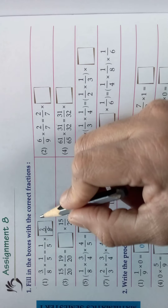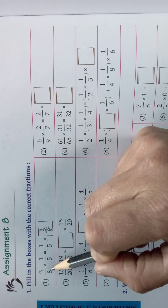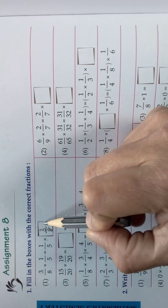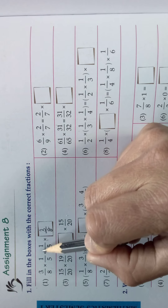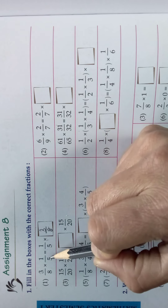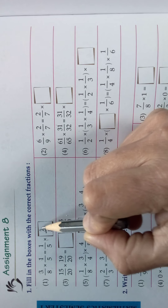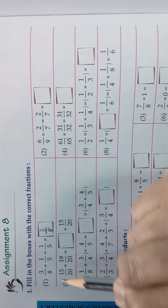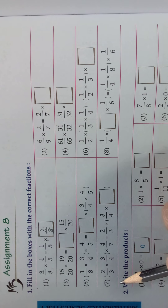This is called the order property. If you change the order in multiplication, the answer won't change — the answer will be the same. After the equal sign, 1/5 is there but 3/8 is not there, so you should write 3/8 as the missing number. This is called the order property.